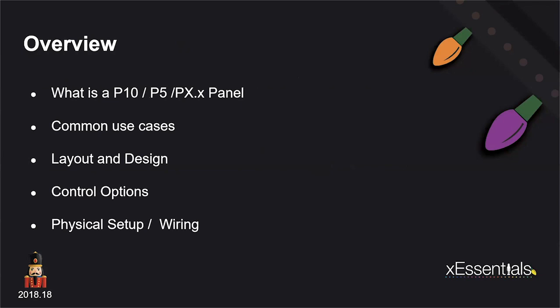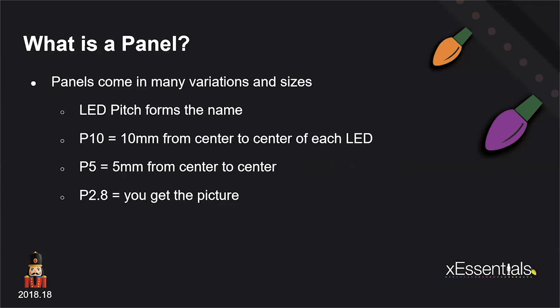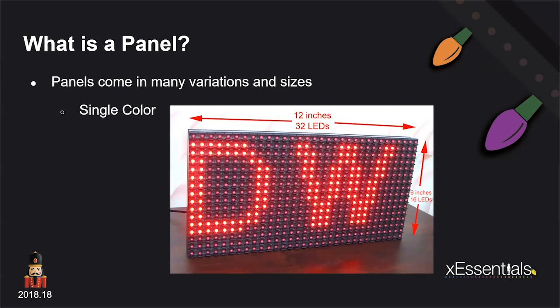The overview will cover what panels are, some common use cases, layouts and designs, and the different control options. Scott is going to cover the physical setups and wiring towards the end. So, what is a panel? A panel is just a sheet of PCB with some plastic that has a whole bunch of lights on it in a matrix. The words P10, P5, P2.8 — whatever it may be — are derived from the dot pitch. A P10 panel has an LED light that is 10 millimeters from center to center to the next one in the matrix.